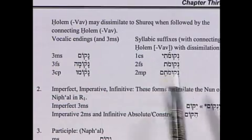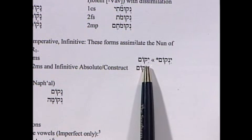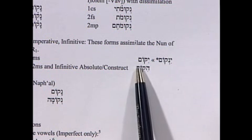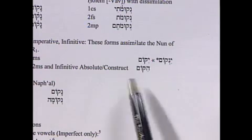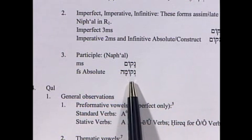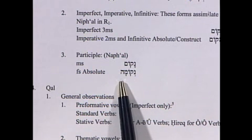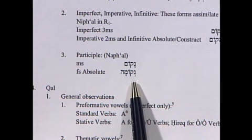With dissimilation, the accent shifts and the original patach in the open pro-pretonic position reduces to shva. For the imperfect, imperatives, and infinitives, notice the dagesh in the qof — that is the nun of the Nifal simply assimilating — and the holem-vav is the thematic vowel. For the participle, you get the long qamets under the nun in the pre-tonic open, but adding a suffix shifts it to the pro-pretonic open, causing reduction under the nun.